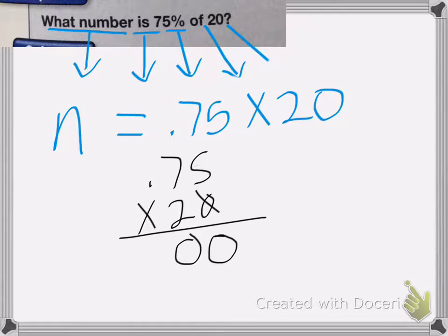2 times 5 is 10. Carry my 1. 2 times 7 is 14. Plus 1 is 15.